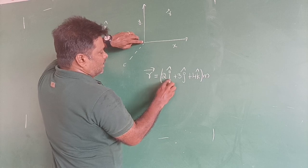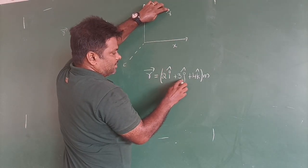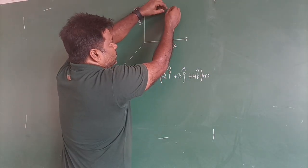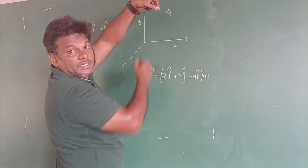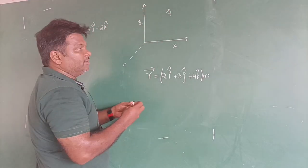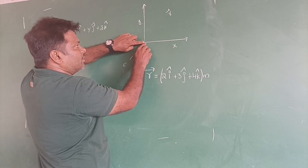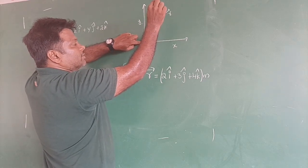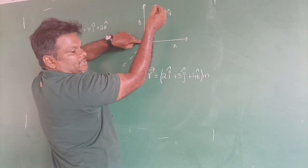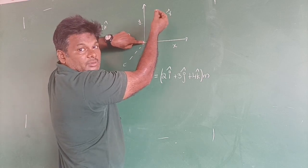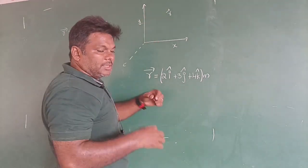So what it means: 2 meters along x-axis, 3 meters along y-axis — so you are here. r̄ is equal to 2î plus 3ĵ plus 4k̂. Now you need to move somewhat away from this plane so that you will be in space — in the x direction, y direction, and z direction. The final point is 2 meters along x-axis, 3 meters along y-axis, 4 meters along z-axis.